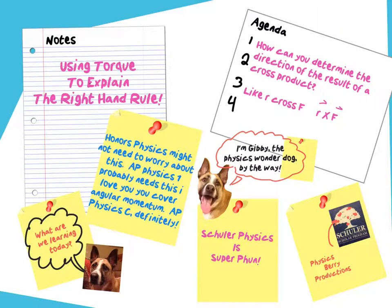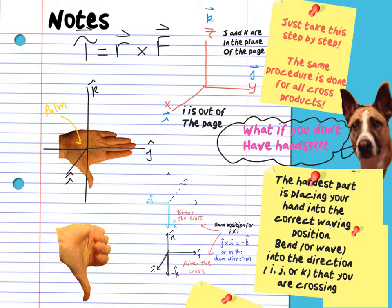Alright, so we're going to figure out how you can determine the direction of the result of a cross product. So for instance, your torque is r cross F. So we are going to be figuring this out. Okay, we're going to take this step-by-step. The challenge is that you are not seeing me in real time moving my hand, but it also might be an advantage just to get the frozen pictures of my hand. So we're going to start with a cross product. You are going to use the same reasoning or the same procedure for all cross products.